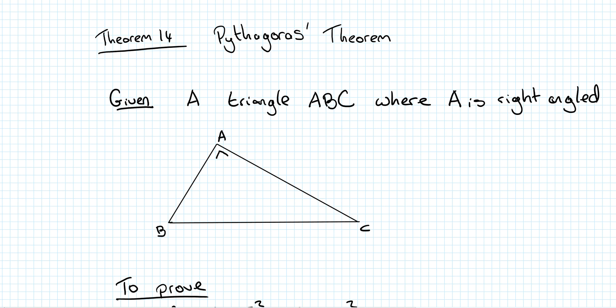In this video we'll be looking at the fourth of six proofs. Before you watch it, I'd probably recommend looking at Theorem 4, Theorem 6, and Theorem 9. Now we're on to Theorem 14, our second-last proof, and it's Pythagoras's theorem. The question will simply state: prove Pythagoras's theorem, or prove that in a right-angled triangle ABC where A is right-angled, the hypotenuse squared equals the sum of the other two sides squared.